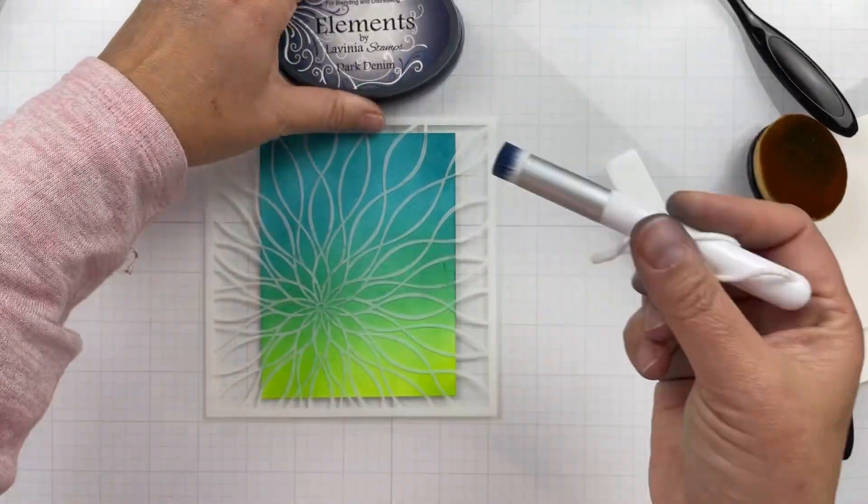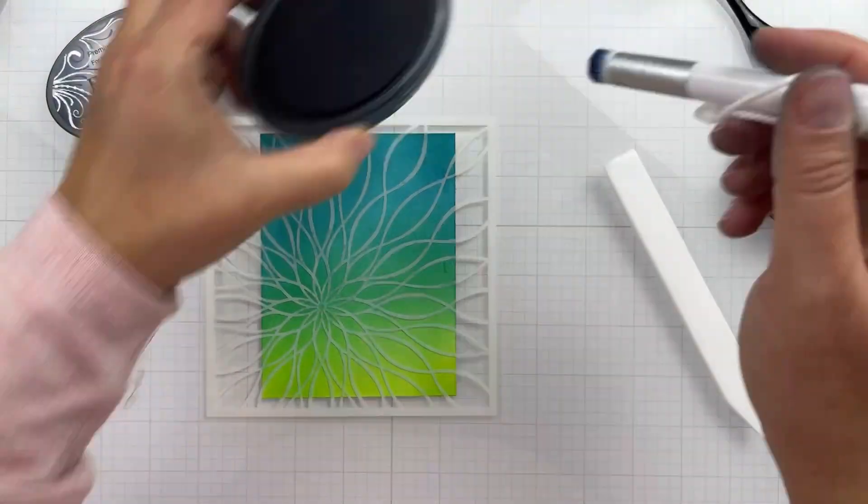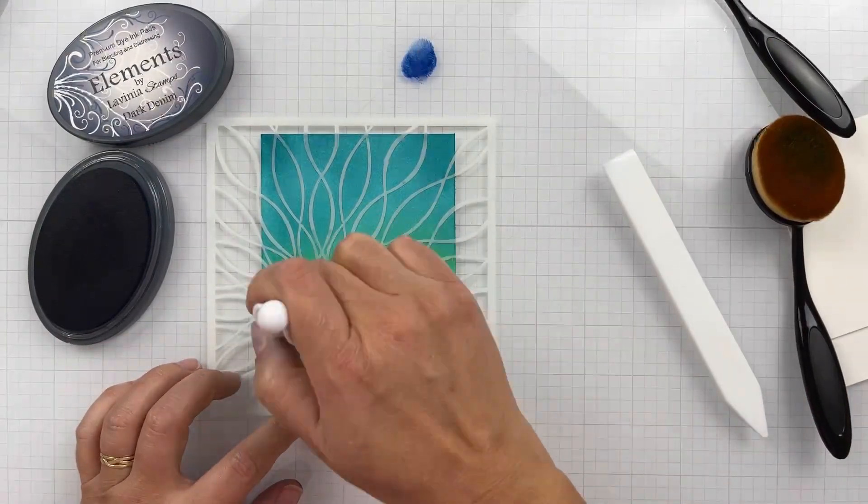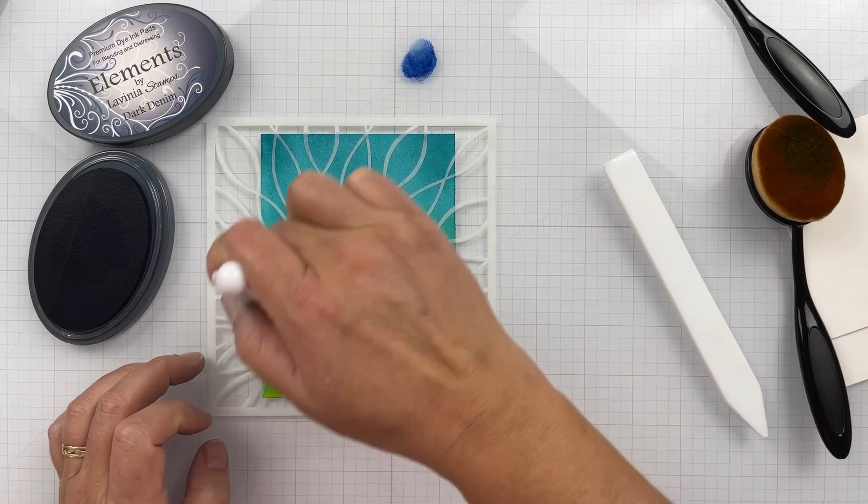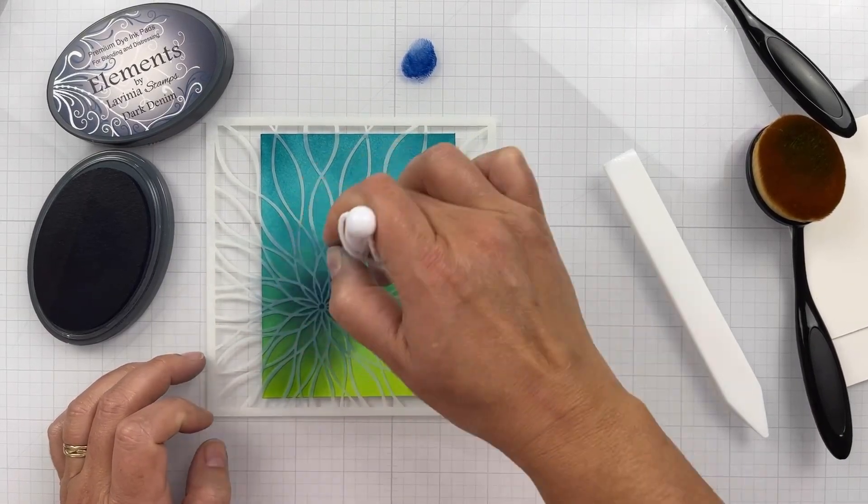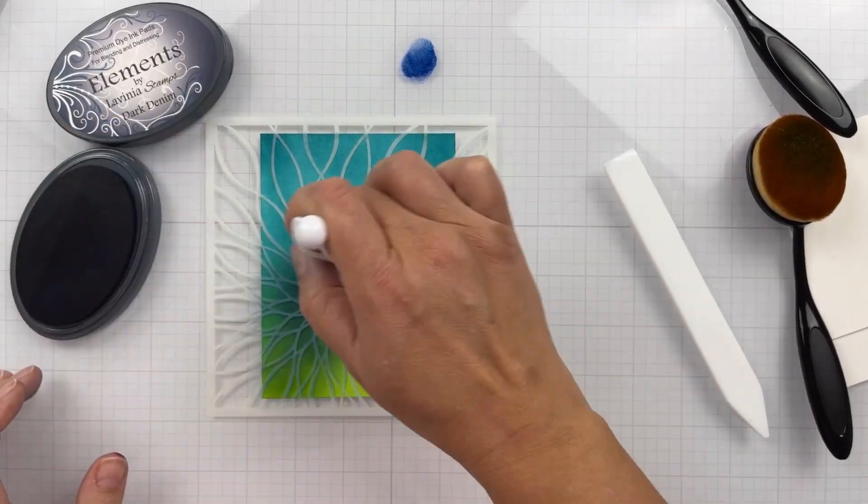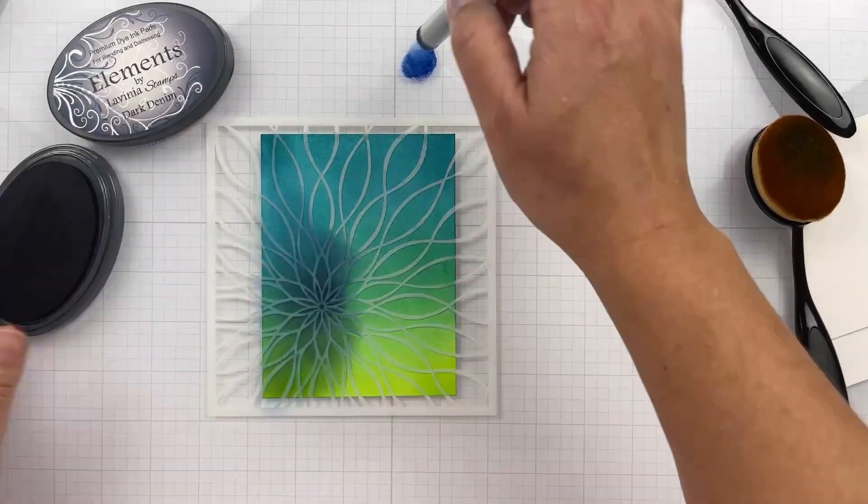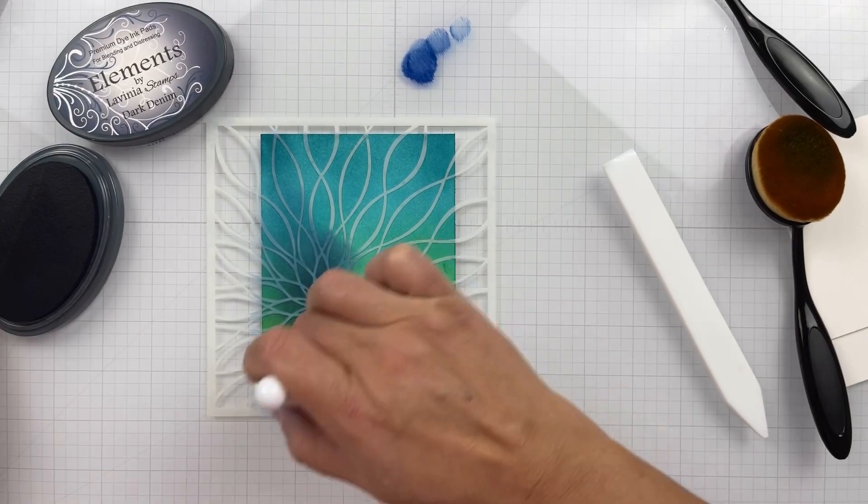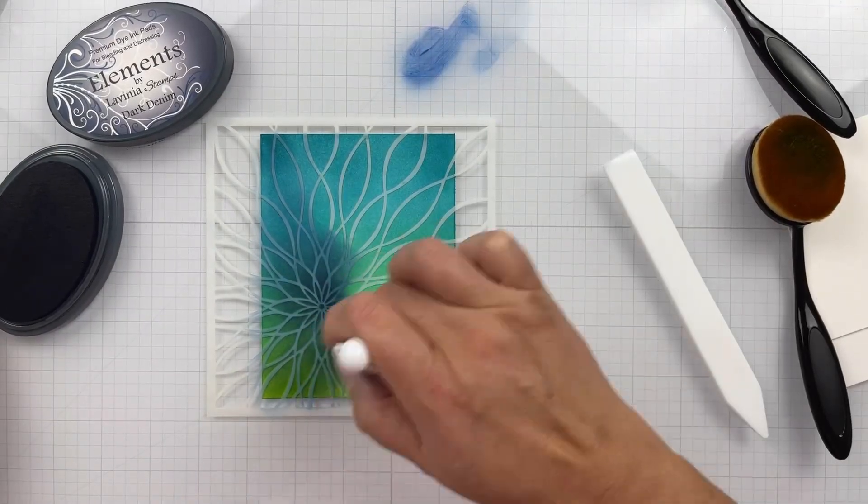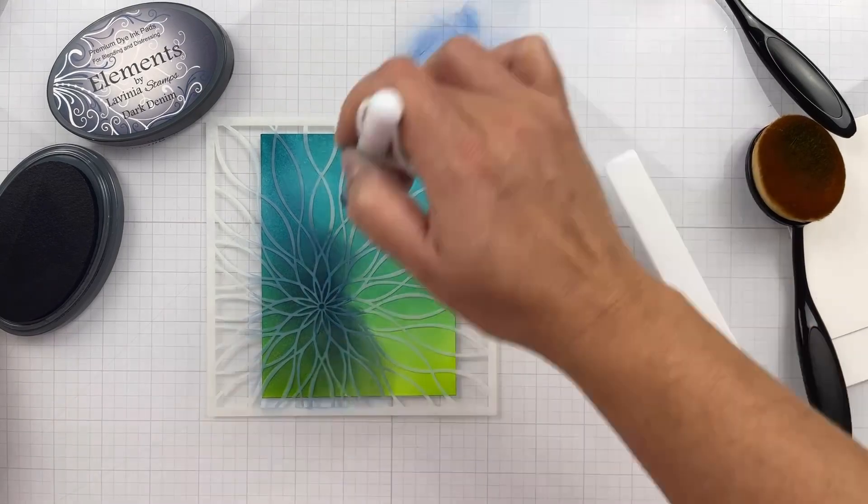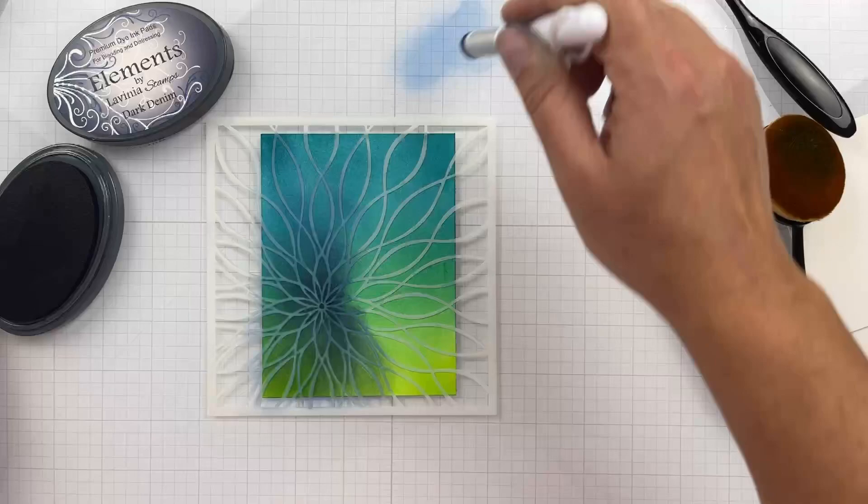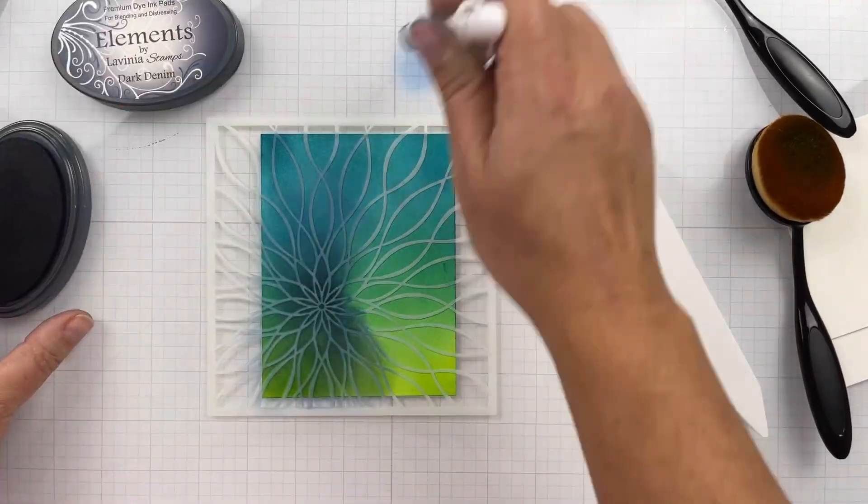I got that all blended together. Now I'm coming in with my Floral Wave Offset stencil and I'm going to use a fine detail blending brush with that Dark Denim. I'm starting off with this smaller, more concentrated detail blending brush because I want it to be nice and strong where the floral part is and fade it out. My hand starts to get tired because I'm trying to fade it out with that little brush.